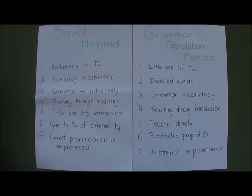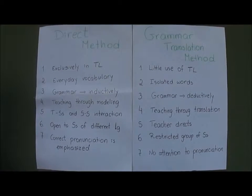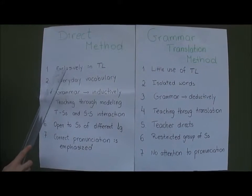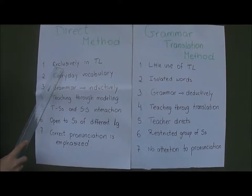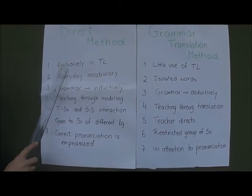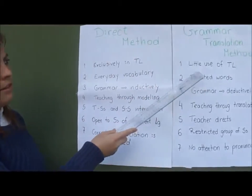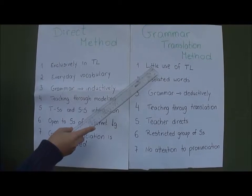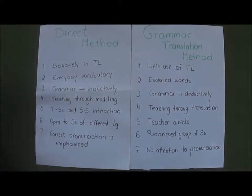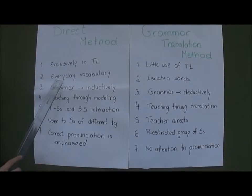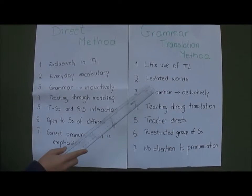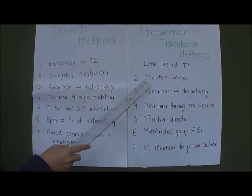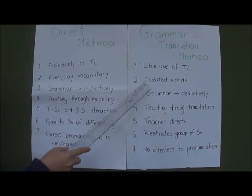We will now contrast the direct method with the grammar translation method. First, the direct method uses exclusively the target language, so the class is only in the target language. Whereas in the grammar translation method there is little or almost no use of the target language. Second, the direct method teaches everyday vocabulary and sentences, whereas the grammar translation method teaches isolated lists of words with no relation to students' everyday life.